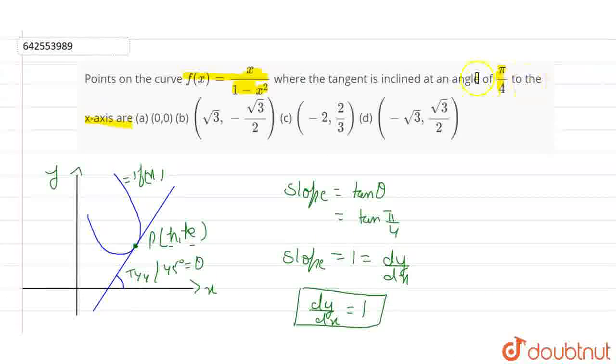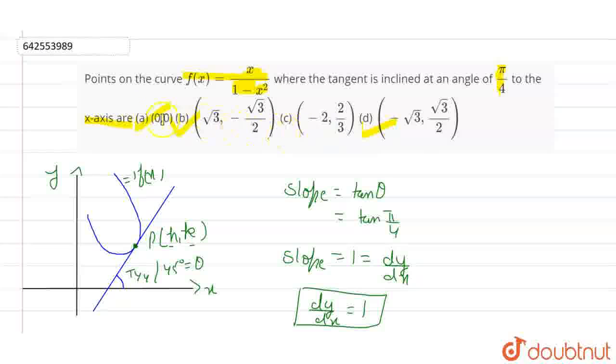So if you go to the question, we can see that we have three values — option A is correct, option B is correct, and option D is correct. So the correct answers are A, B, and D respectively.